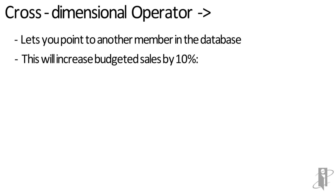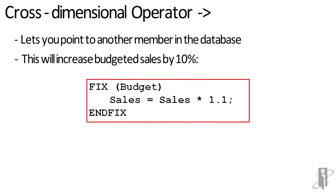So let's say we wanted to increase our budgeted sales by 10%. We just say fix on budget, and this limits out all of the other slices of scenarios in the database, so it's not going to look at actual or whatever forecast. The next line says sales equals sales times 1.1. This is going to take sales from budget, increase it by 10%, and then put the result in sales budget.